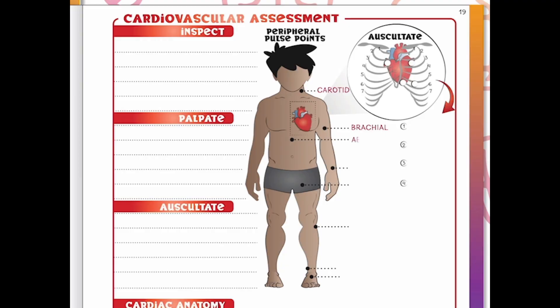Our next pulse point is the abdominal aorta. This is really important if we suspect a potential aortic aneurysm, which we'll cover in the cardiac module. If you see the stomach pulsating, this is not a good sign. In a very thin patient this could be harmless, as there's not much fat covering the aortic pulse.